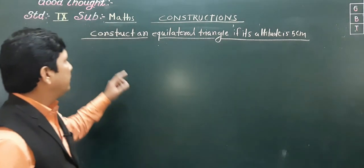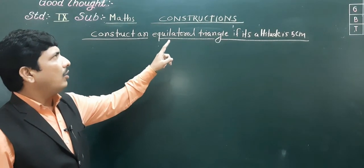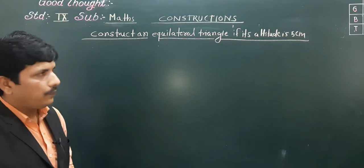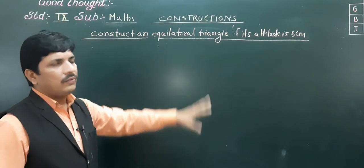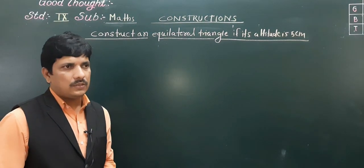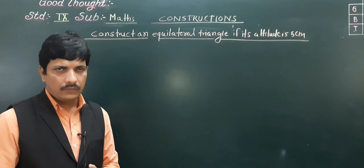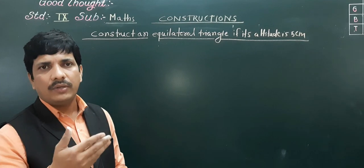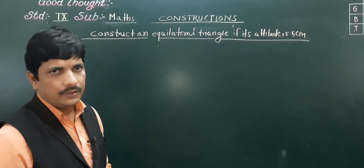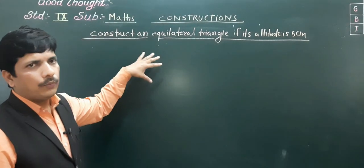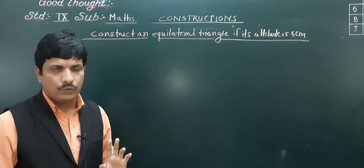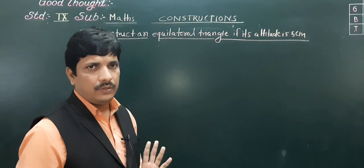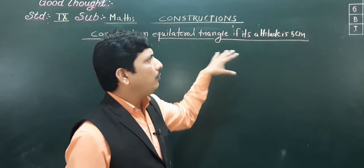Our second construction is: construct an equilateral triangle if its altitude is 5 centimeter. An equilateral triangle has all sides equal in length and all angles equal to 60 degrees. Using these two properties we need to construct it. Here the length of any side is not given, only the altitude is given, and with that we are going to construct the triangle.